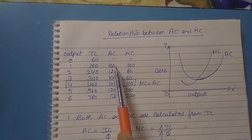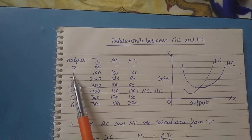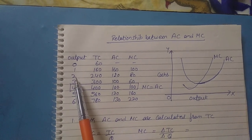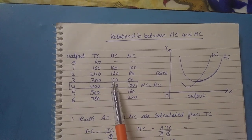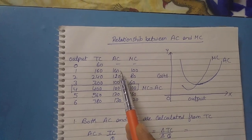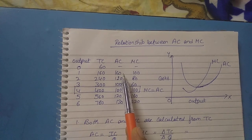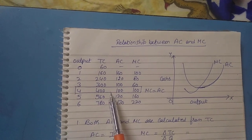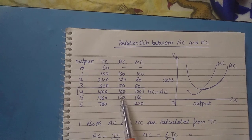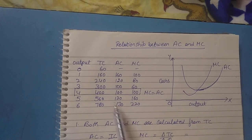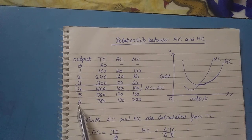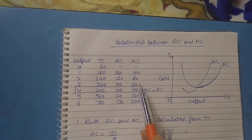The next column is average cost. When we are producing the first unit, the average cost was 160. When producing the second unit, it comes to 120, the third unit it comes to 100, and the fourth unit it also comes to 100. You can see that average cost is declining from the very first unit until the 3rd and 4th unit, where it becomes constant. After the fourth unit onwards, it starts increasing — on the fifth unit the average cost is 120, and on the sixth unit it is 130.